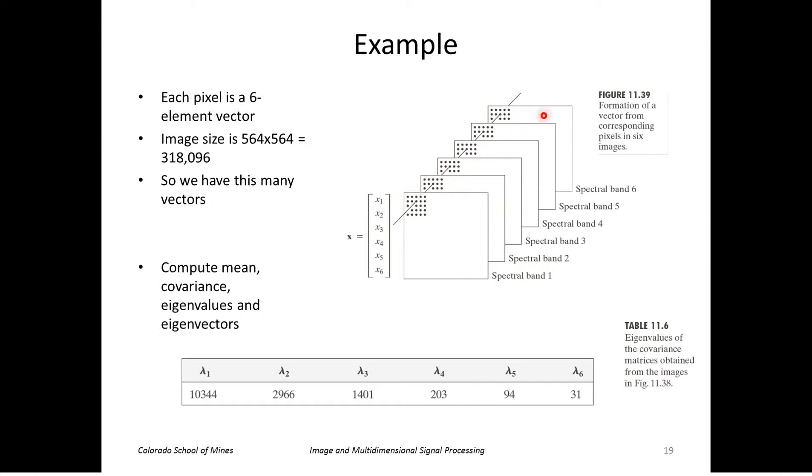Another way to look at it: here's our collection of images. There's six bands. Each image has 564 by 564 pixels, or 318,000, where each pixel has six dimensions. So we take this many vectors, these 318,000 vectors, each one six-dimensional. We compute the mean covariance and then the eigenvalues and eigenvectors of the covariance matrix. This shows the eigenvalues of that matrix.